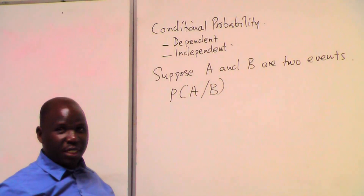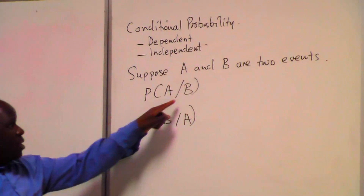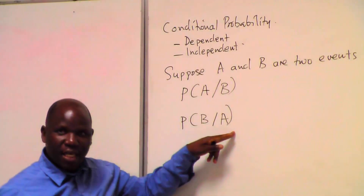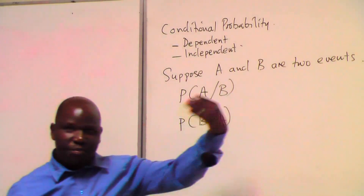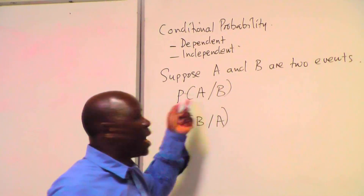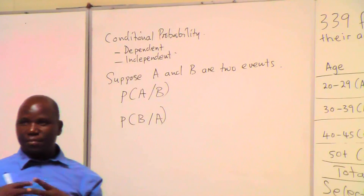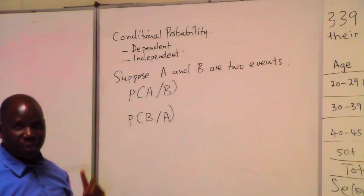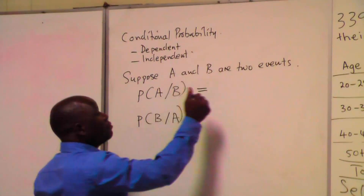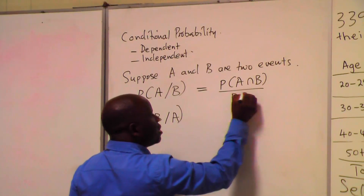That is a conditional probability. We can also have probability of B given A. This line means 'given.' Probability A given B is the probability that A occurs given that B has already occurred — we are told that event B has occurred, now what is the probability that A will occur? The formula: probability of A given B equals the probability of A intersection B over the probability of B.